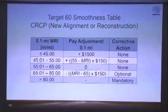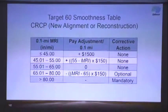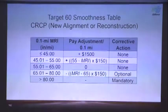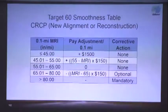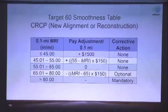This is the first of four smoothness tables — Target 60 — which applies to CRCP new alignment or reconstruction. The maximum incentive is $1,500 per tenth mile. The prorated incentive zone is from 45 to 55 MRI. The full pay range with no incentives or disincentives is 55 to 65 MRI. Beyond that there are prorated disincentives, with a maximum disincentive of $2,250.